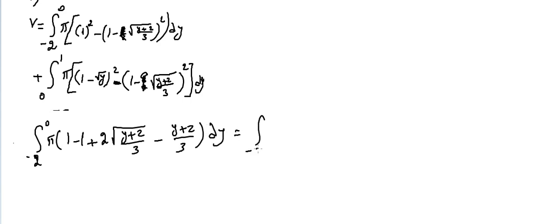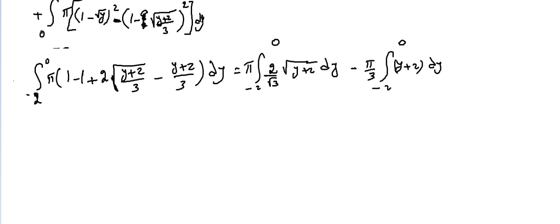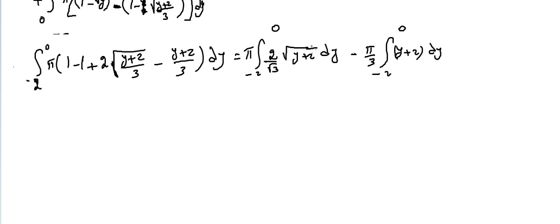Which equals the integral from minus 2 to 0, putting π outside. The 1 minus 1 cancels, leaving 2 over √3 times √(y+2). And minus π times the integral from minus 2 to 0 of (1/3)(y+2) dy. The second part is easy. For the first part, we take u equal to y+2, which changes it to u to the power of 1/2.